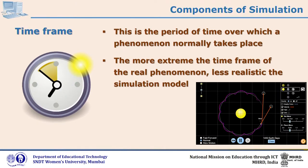Time frame is another important component of simulation. This is the period of time over which a phenomenon normally takes place. The more extreme the time frame of the real phenomenon, the less realistic the simulation model. You can clearly see here that the earth is rotating around the sun and the moon is rotating around the earth. Though the simulation happens in proportion, whatever happens in one year can be shown here in a few seconds, deviating from a realistic time frame but explaining the concept very well.